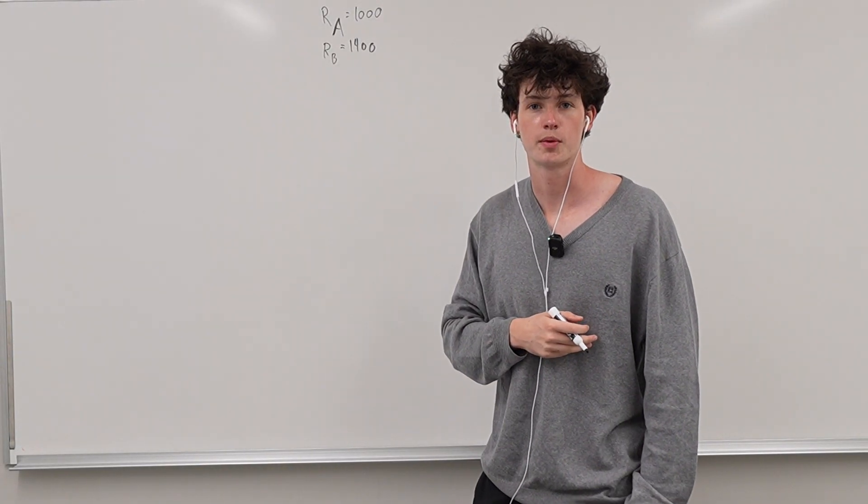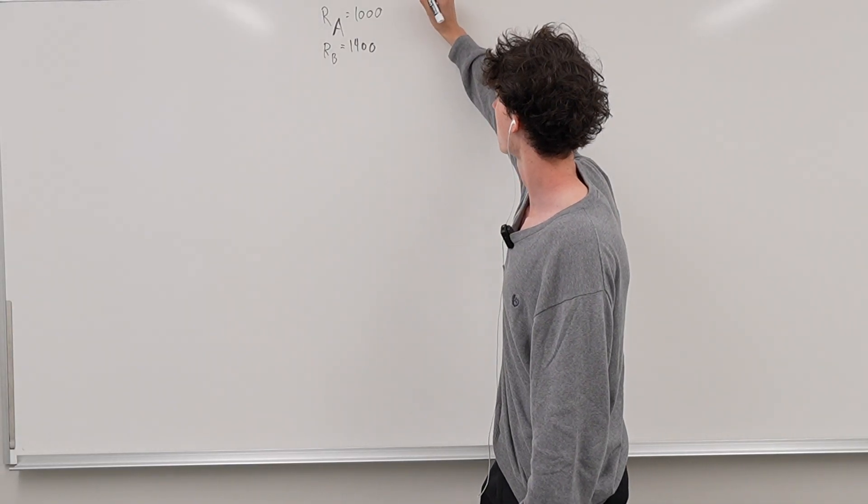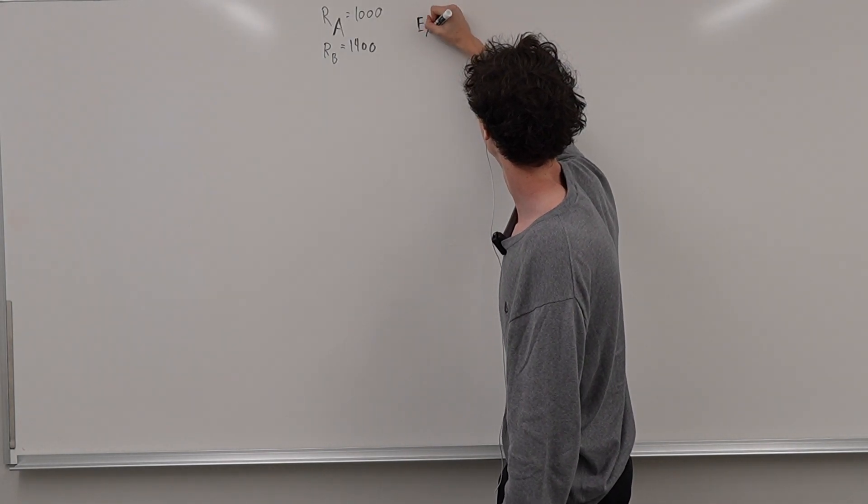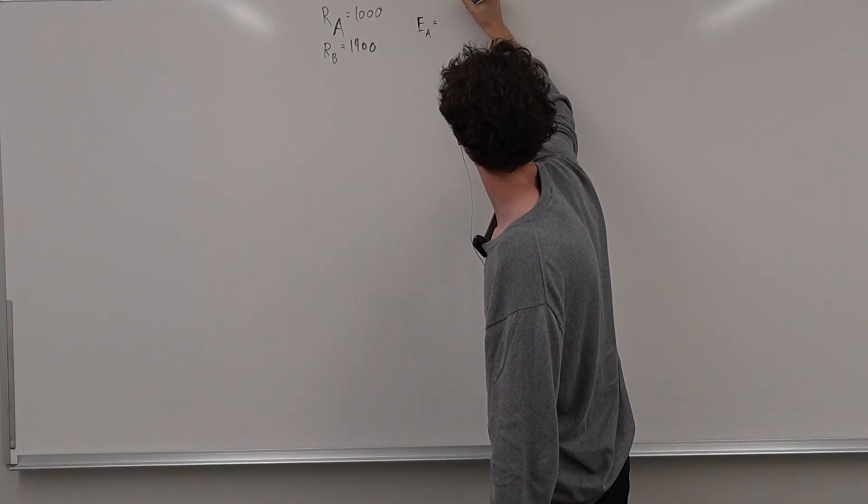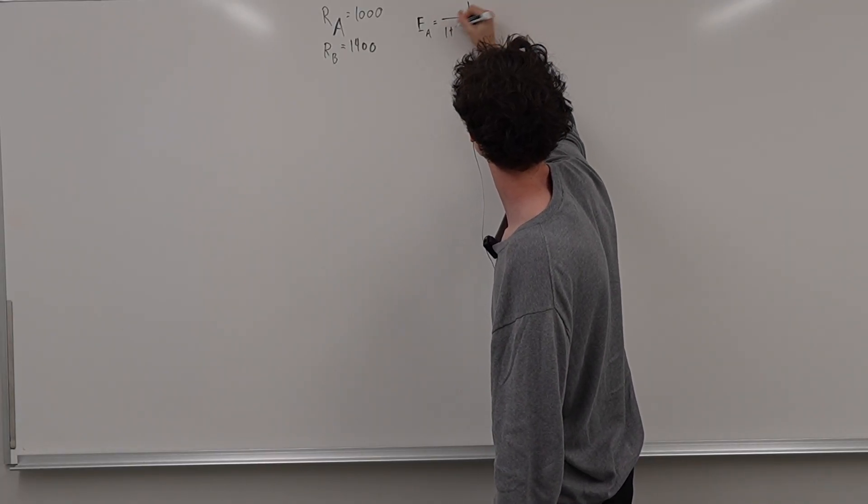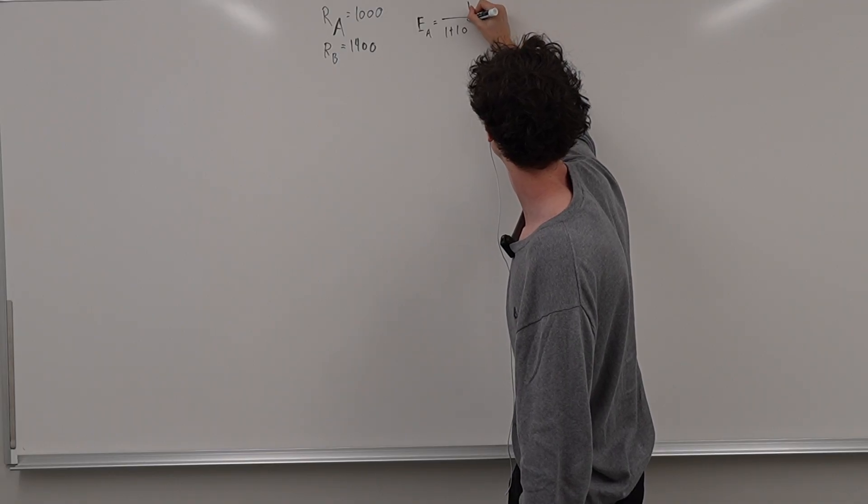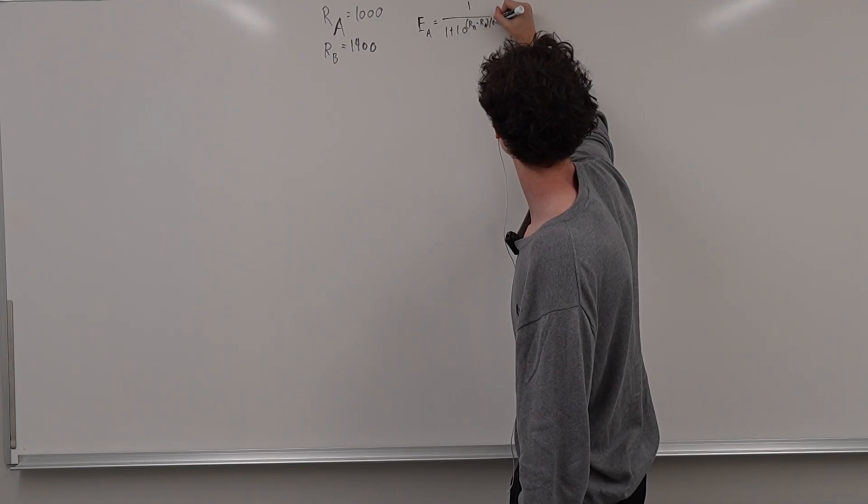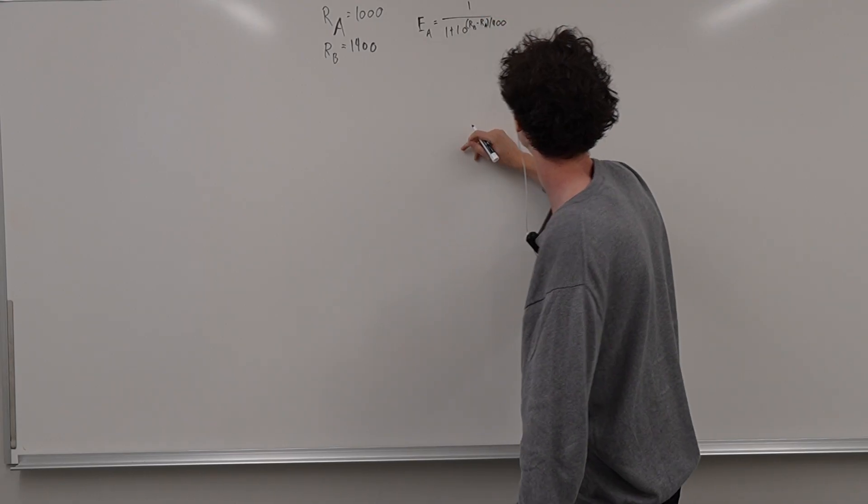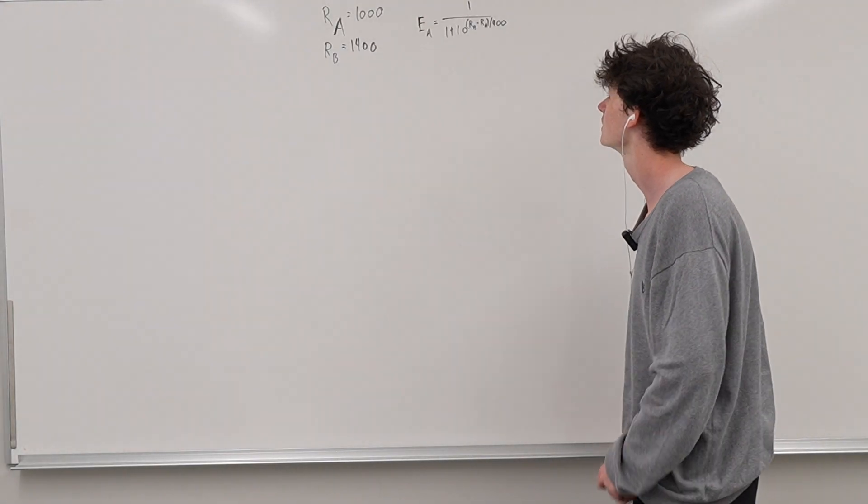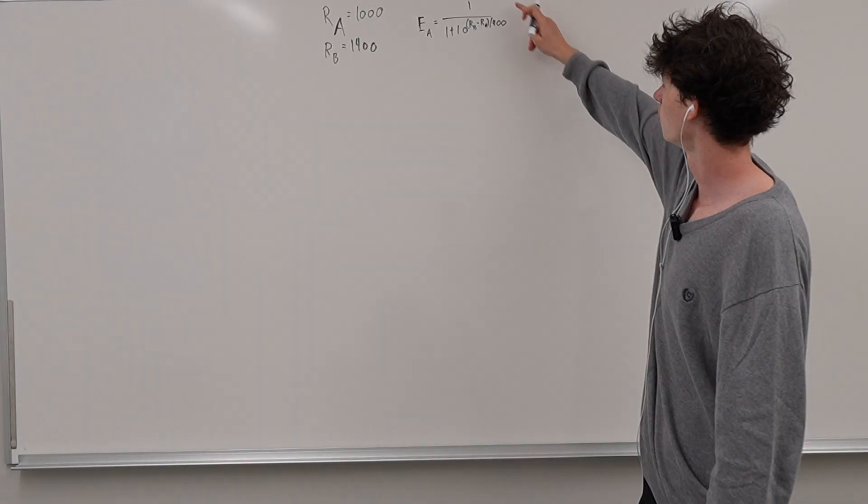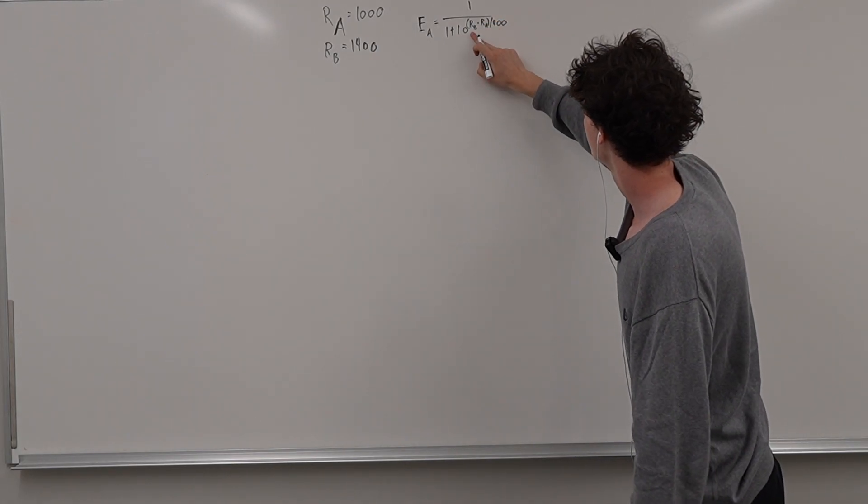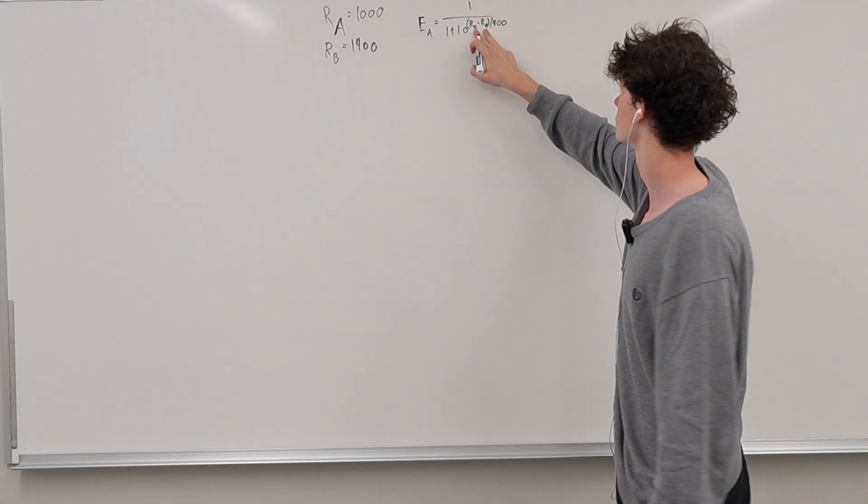Well, the formulation for it is first, you figure out the expected outcome. So we can determine a probability that each player wins. And the common formula is this. So the expected outcome for player A is 1 over 1 plus 10 to the power of RB minus RA divided by 400.